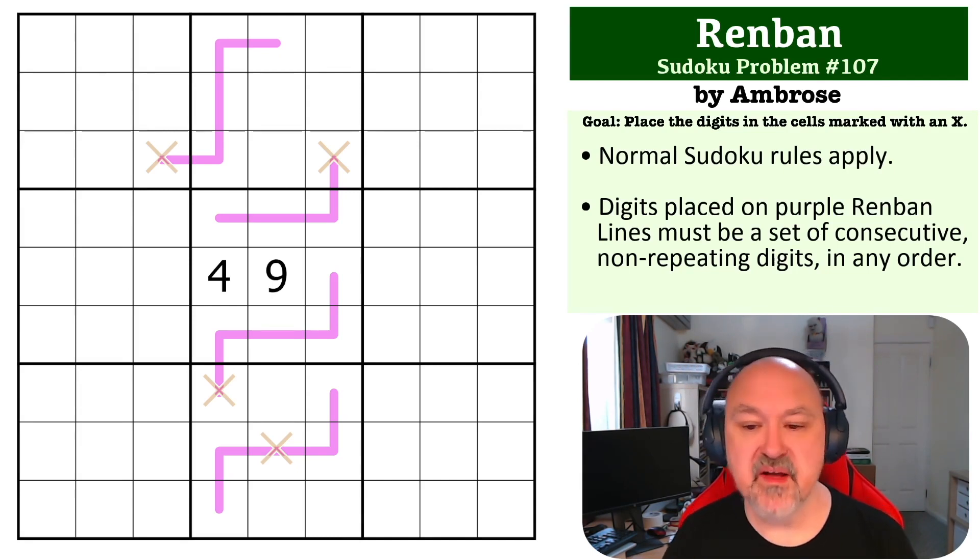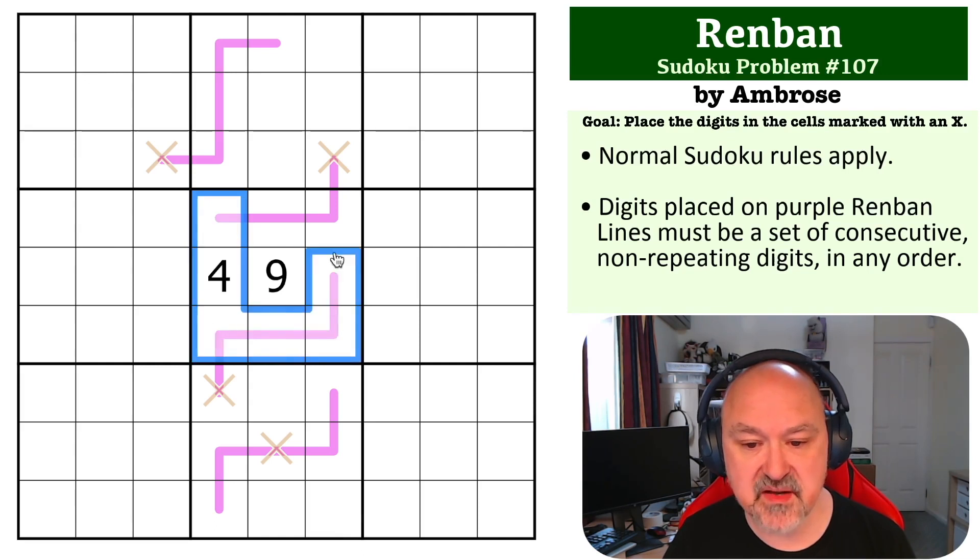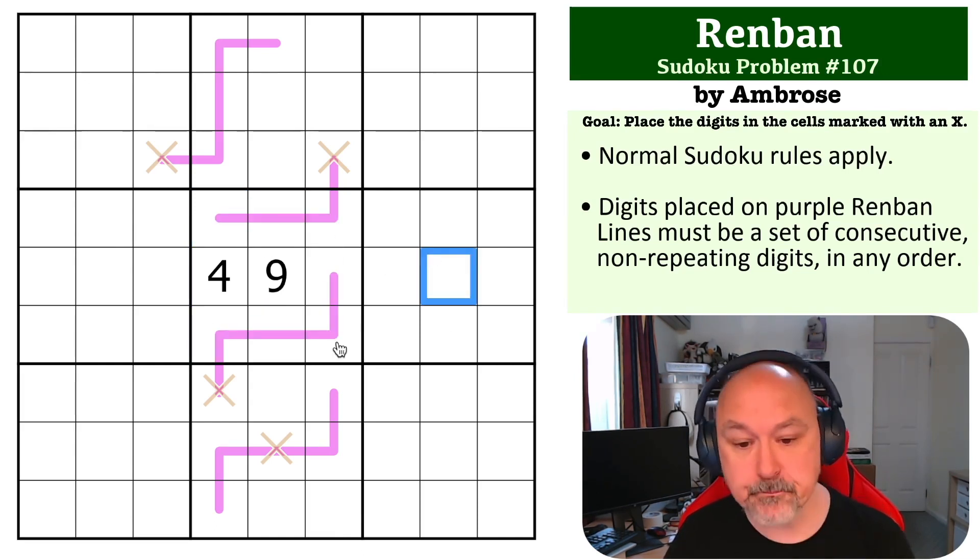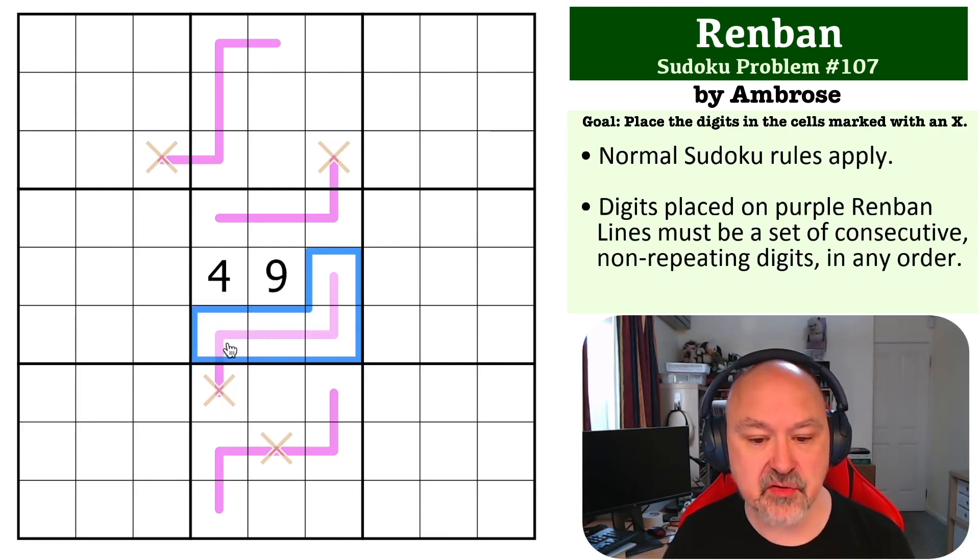So the way I found to work on this one was to start in box five and to ask yourself, where does the one go in this box? Because this line here, if you think about it, cannot take a one. Because once you put a one on a line, it must literally go up from the one. You cannot change it.